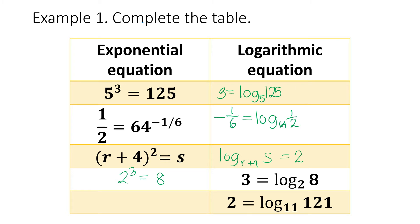Next, 2 equals logarithm of 121 to the base 11. So the base is 11. What will be the exponent? The value of the logarithm, which is 2. So, 11 squared equals 121. Or you may write it as 121 equals 11 squared.